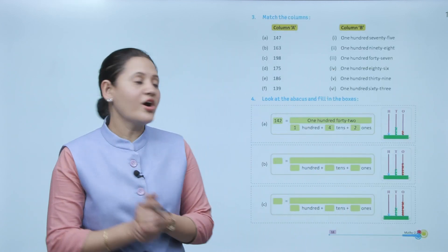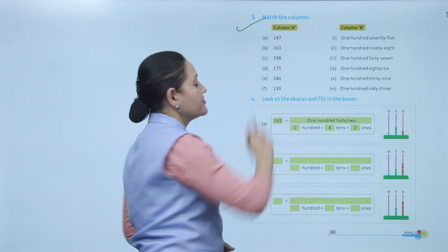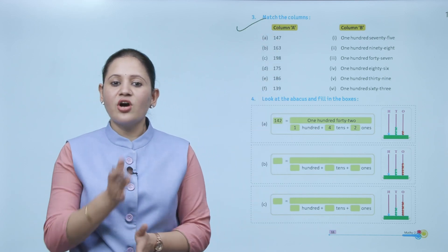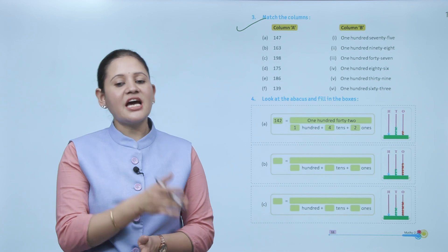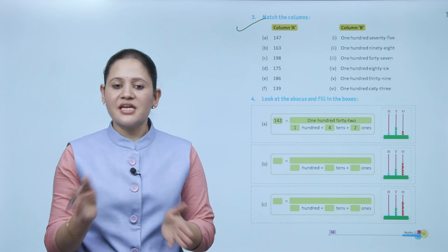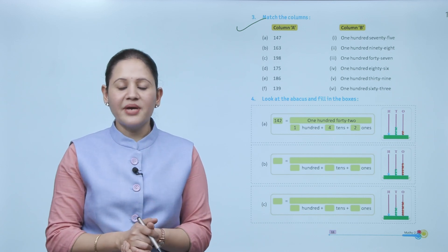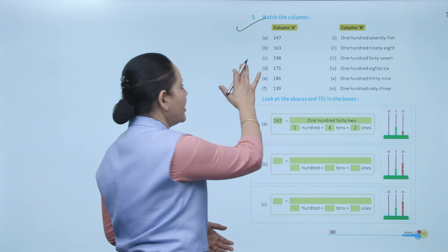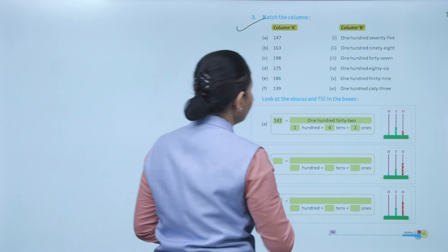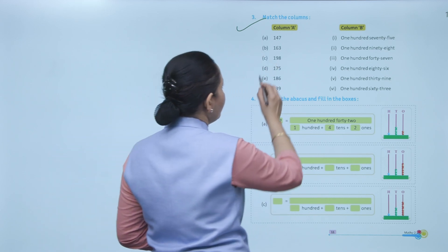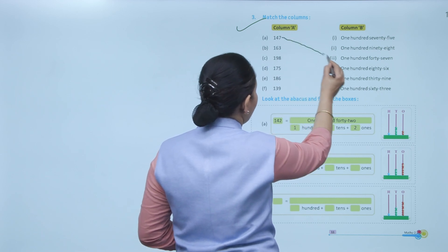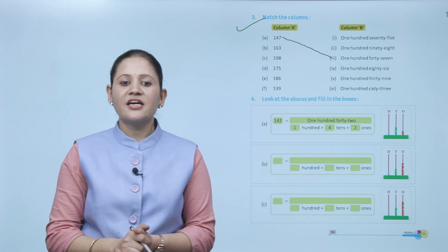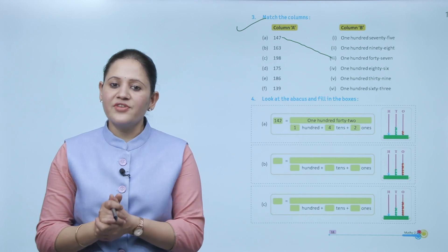Next is: match the column. Two columns are given — column A and column B. In column A, numerals are given and in column B, number names are given. For example, 111 — we have to match the numeral with the correct number name. First is 147, so we will match 147 with its number name. Like this, clear.